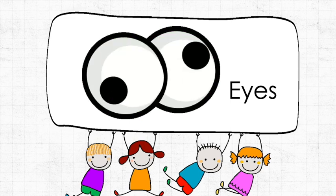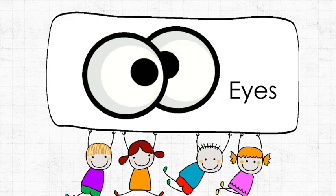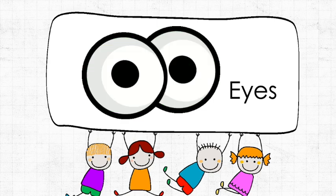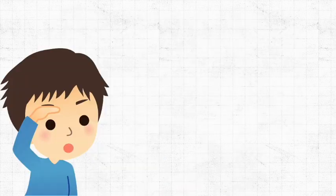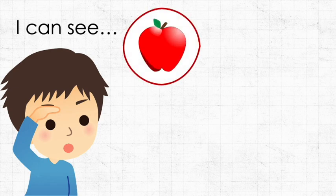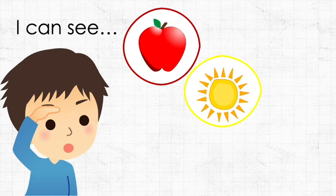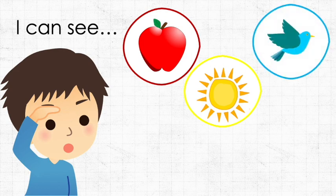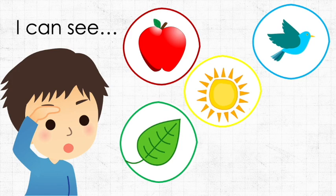Our eyes are very important because they help us see all the people, including your mommy and daddy, and the things in the world around us. Our eyes help us see different colors like this apple which is red, the sun which is yellow, the bird which is blue, the leaf which is green, and the orange which is orange.